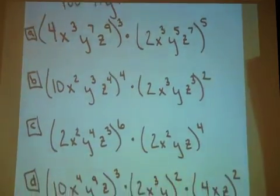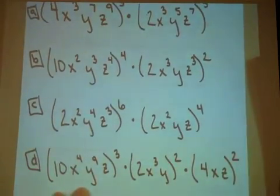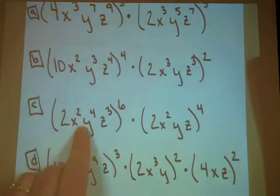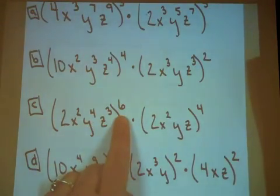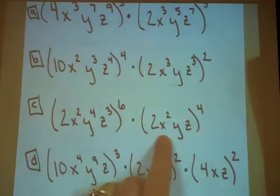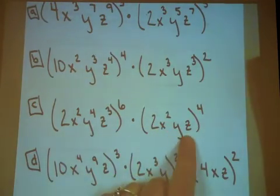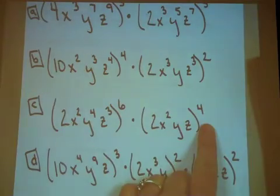Your third problem, problem C. 2 x squared, y to the 4th, z to the 3rd, all of that to the 6th power, times 2 x squared, y, z, all of that to the 4th power.